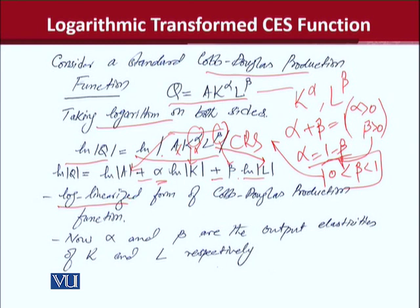Because हमने अब इसको log की form use करके linearize कर दिया है. अब आप देखें capital की power की value और labor की power की value अब 1 है, it is not alpha और beta anymore. So in this way we can linearize a Cobb-Douglas production function.